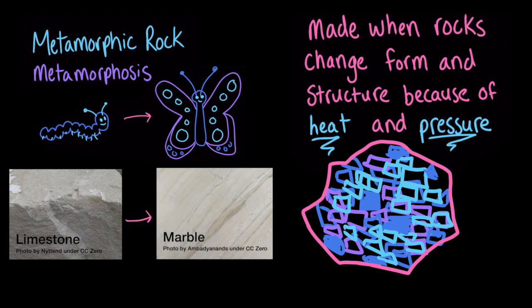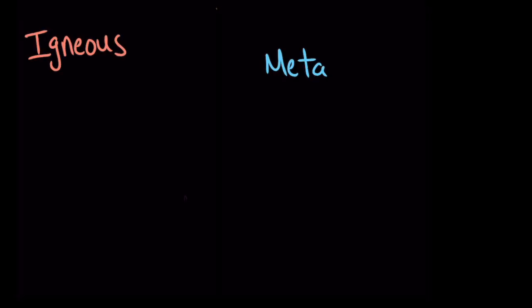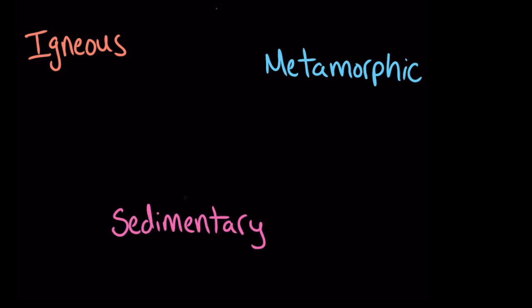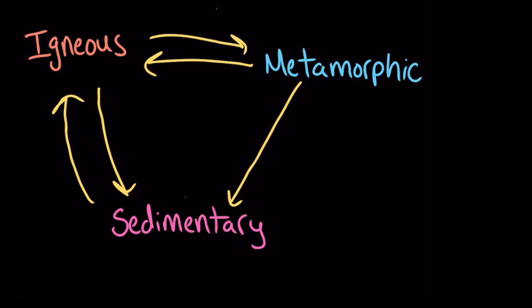But metamorphic rocks still might not be done changing. Rocks can actually keep on changing forever. Igneous and metamorphic rocks can become sedimentary rocks if they are broken apart into sediments and go through lithification. And metamorphic rocks and sedimentary rocks can become igneous rocks when they are melted and then cool. And igneous rocks and sedimentary rocks can become metamorphic rocks when they are exposed to high heat and pressure. This is called the rock cycle.